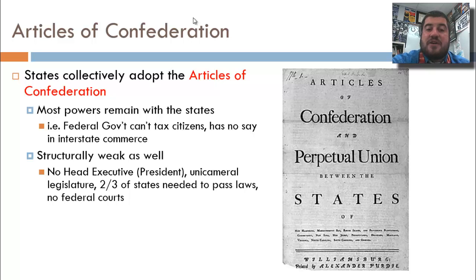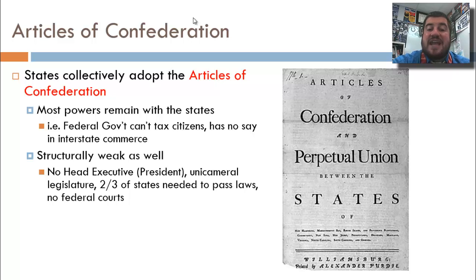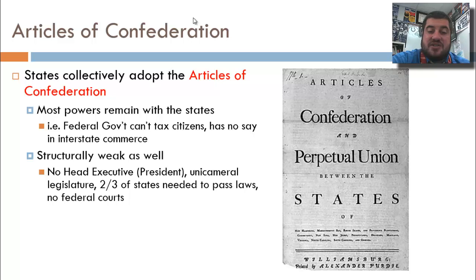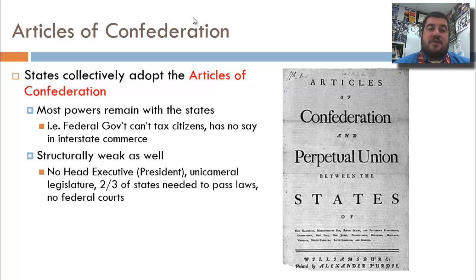For example, the federal government can't tax citizens and has no say in the regulation of interstate commerce. It's also structurally weak — there's no head executive, no president. There's a head of the legislature, but no president. It's a one-house legislature. Two-thirds of the states need to vote yes to pass laws, and there's no system of federal courts either. So this is a very, very weak government.